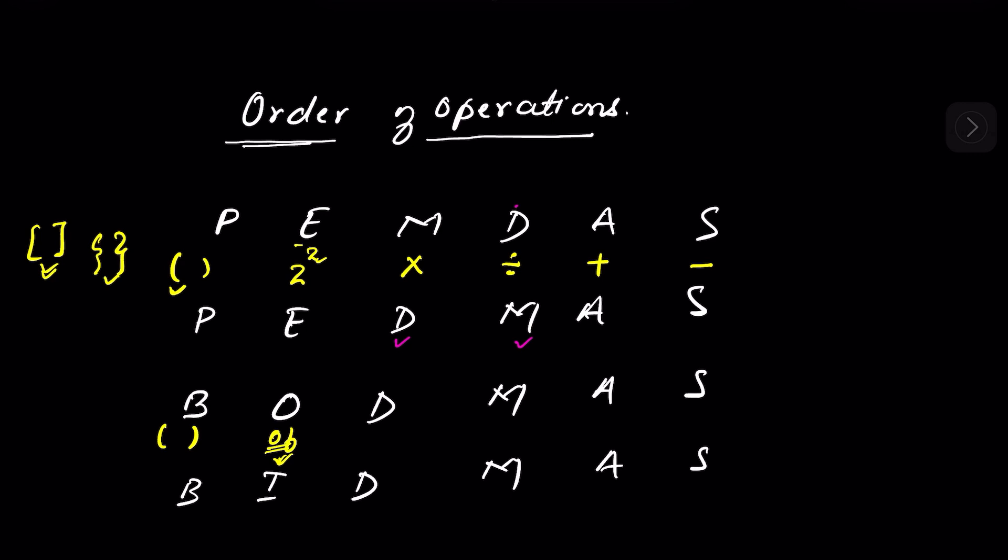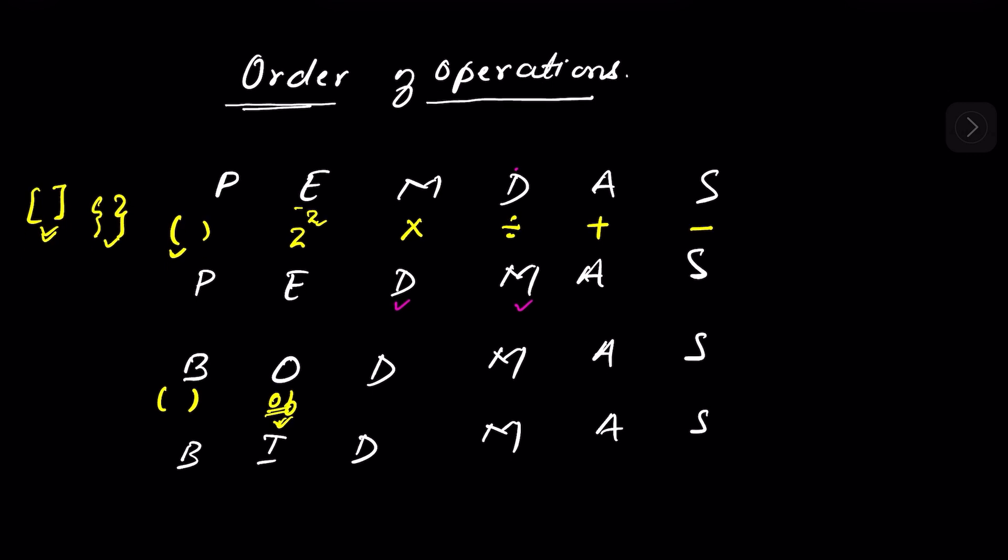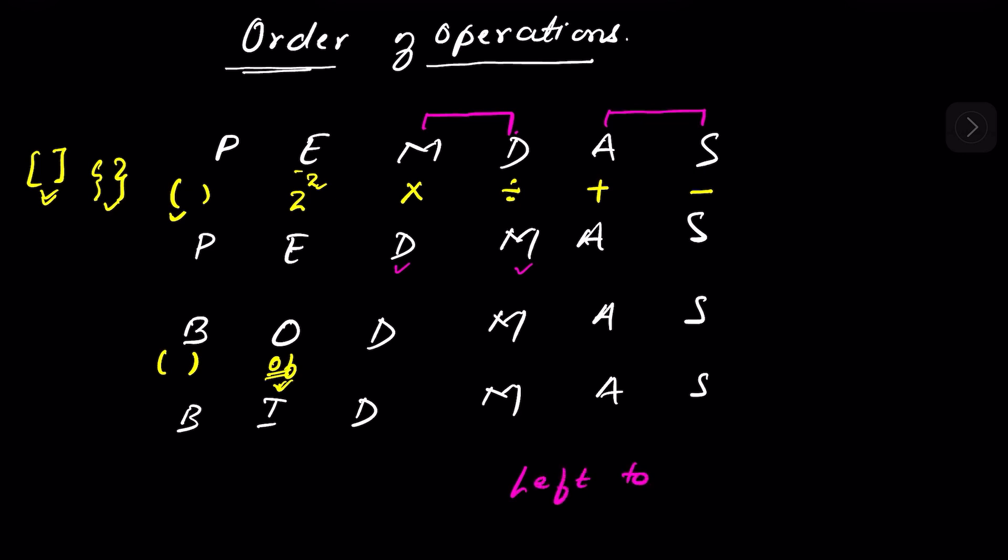So which to do first, multiplication or division? To rule out this confusion, we group them together. They do not follow any exact order. Whichever comes first from left to right when you solve the problem, you solve that first.